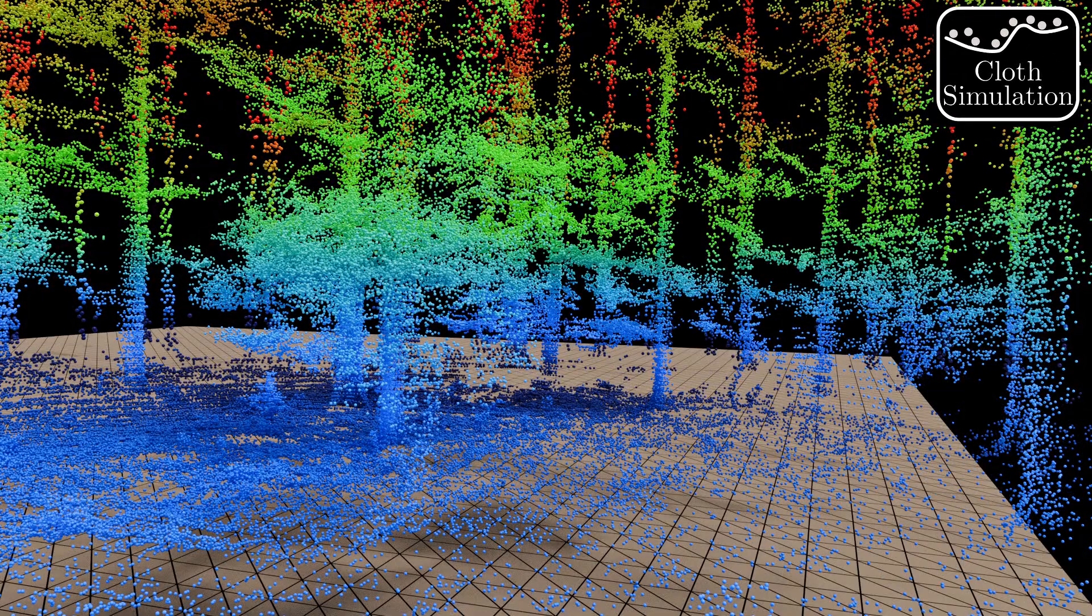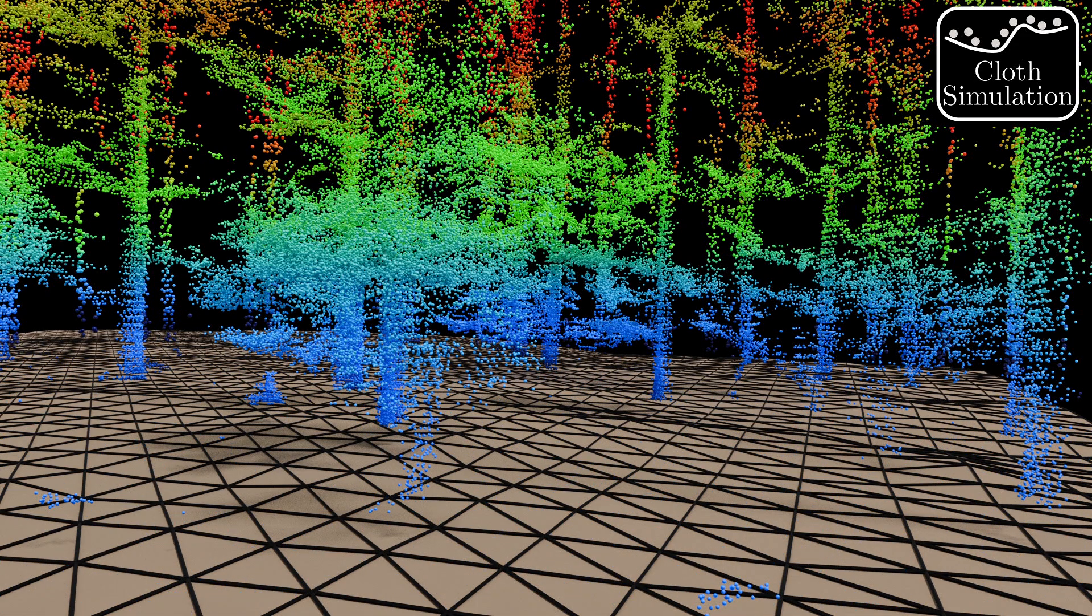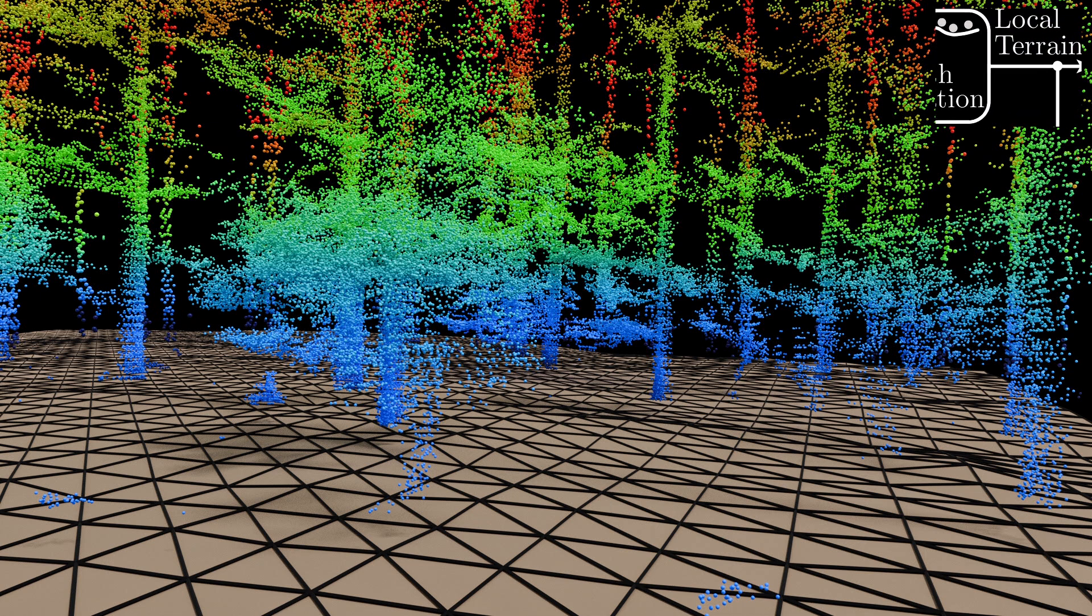As a first step of reconstruction, we model the terrain using a cloth simulation filter. We then remove ground points by proximity to this terrain. For clustering, we now need robust estimates of the stem axes. To find these, we use non-maximum suppression on several axis candidates at different heights.